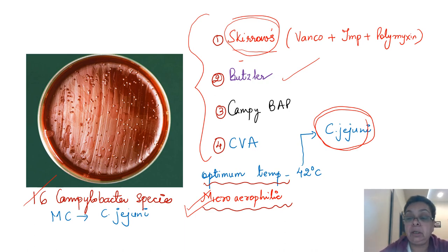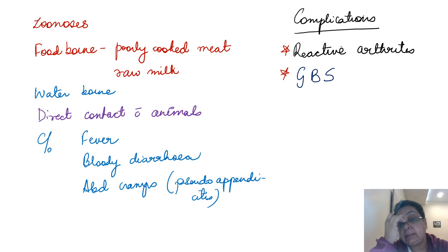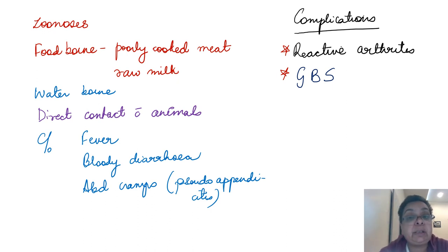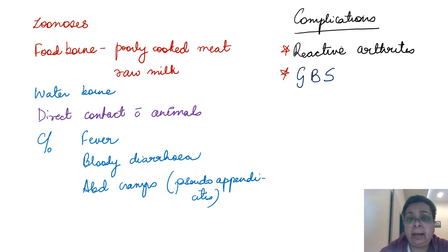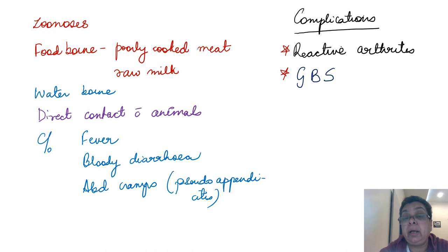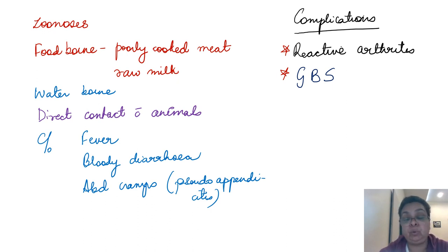There are 16 Campylobacter species; the most common cause of human disease is Campylobacter jejuni. Campylobacter jejuni is the sole species for which the optimum temperature of growth is 42°C. All Campylobacters are microaerophilic, meaning they require about 2 to 8% oxygen to grow. Campylobacteriosis is a zoonotic disease because Campylobacter species are present as normal gut flora in several animals — dogs, cats, sheep, cows, and birds like hens and turkeys — but never as normal human flora. In humans, it is pathogenic if ingested.